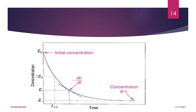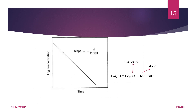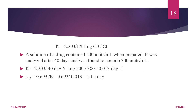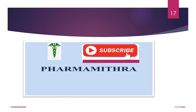Initially when we plot concentration versus time we get a curve, but when we plot log concentration versus time using log Cₜ = log C₀ − kt/2.303, we get a straight line where log C₀ is the intercept and the slope equals −k / 2.303, allowing us to determine the rate constant. To answer exam questions: write the definition, give an example, derive the rate constant equation, then derive shelf life and half-life.